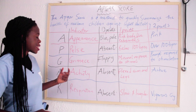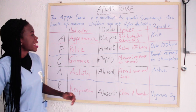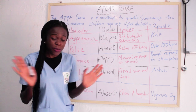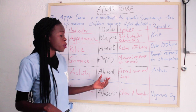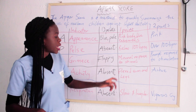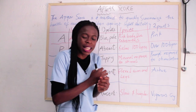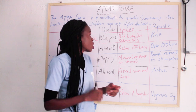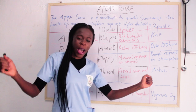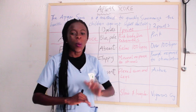Then the next component is A — Activity. If there is no activity at all and the baby is just stagnant, you give the baby zero — activity is absent. If there is flexed arms and legs, the baby is just flexed, you give the baby one point. If the baby is active and moving, you give the baby two points.